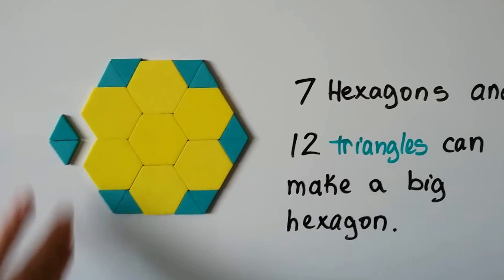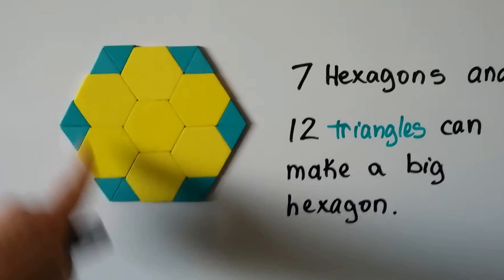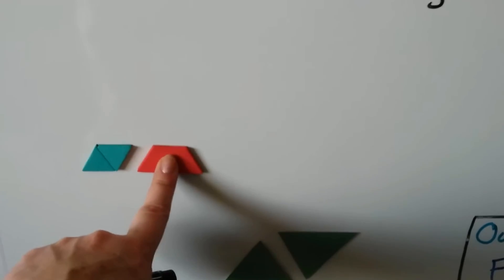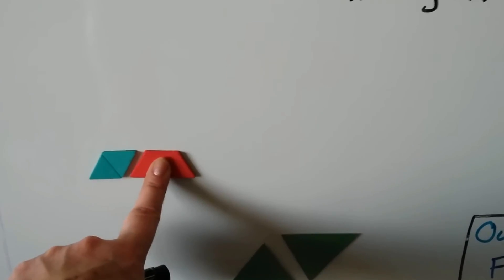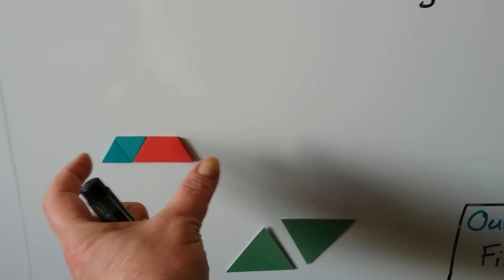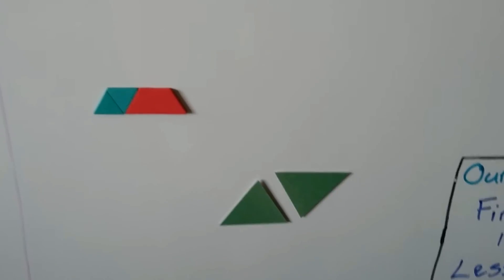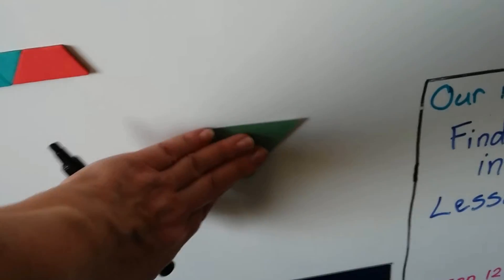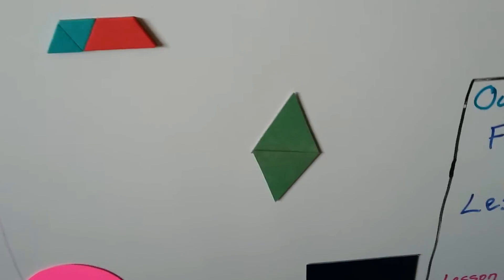I put two triangles together to make a rhombus, and when I put them together with a trapezoid I made a wider trapezoid. I can take two triangles and put them together to make a rhombus, and when I turn it sideways it looks like a diamond shape.